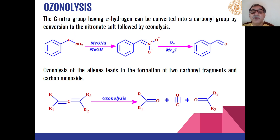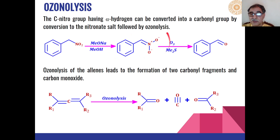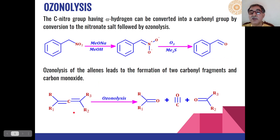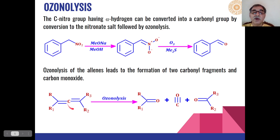Nitro compounds that have alpha hydrogens can be converted into carbonyl compounds upon ozonolysis. When a nitro compound is reacted with sodium methoxide in methanol, a carbon-nitrogen double bonded compound is formed, and this on ozonolysis undergoes breaking of the bond to give benzaldehyde as the product. Similarly, for allenes, the carbon-carbon double bond breaks at two places: breaking of the first bond gives one carbonyl compound, breaking of the second bond gives another carbonyl compound, and a molecule of carbon monoxide or carbon dioxide is also produced.